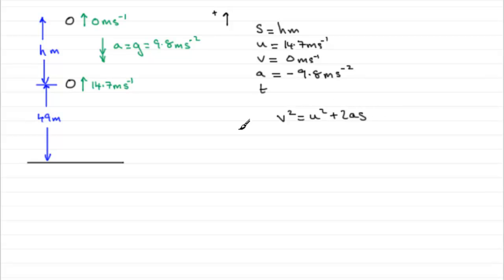So if we use that then we've therefore got V which is going to be 0, so 0 squared is 0, equals U squared 14.7, we'll just pop that in there, squared plus 2 times the acceleration due to gravity which is minus 9.8 and that's multiplied by S which is h.